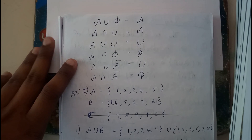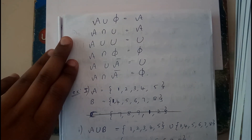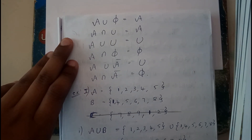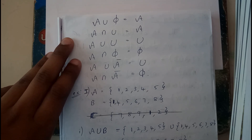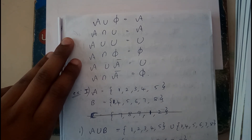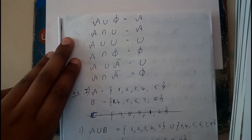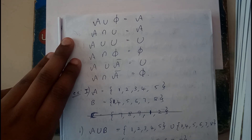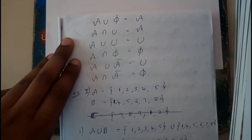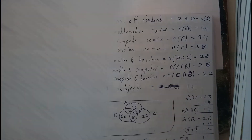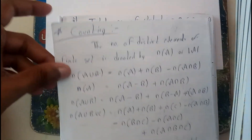A union phi equals A. A intersection universal set equals A. A union universal set equals universal set. A intersection phi equals phi. A union A bar equals universal set. A intersection A bar equals phi.